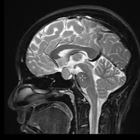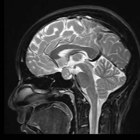In front of the brain stem we see a structure here — there's a little cup called the sella turcica. Within the sella we see what looks like an egg here; this is part of the pituitary gland that's enlarged.